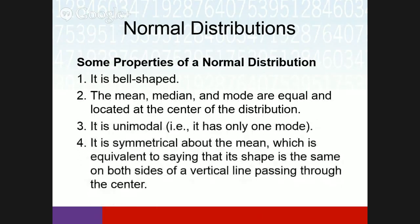Some properties of normal distribution: it's bell-shaped. The mean, median, and mode are equal and located at the center of the distribution. Data that doesn't have the same mean, median, and mode is not normally distributed.